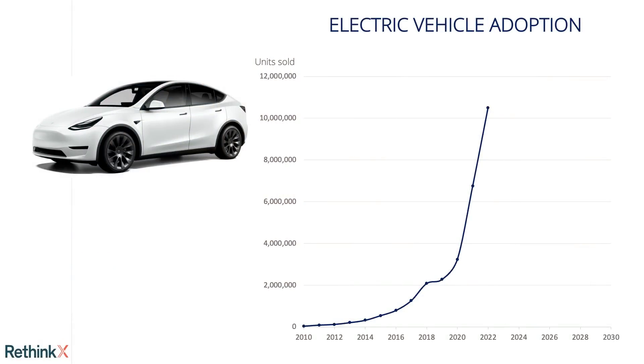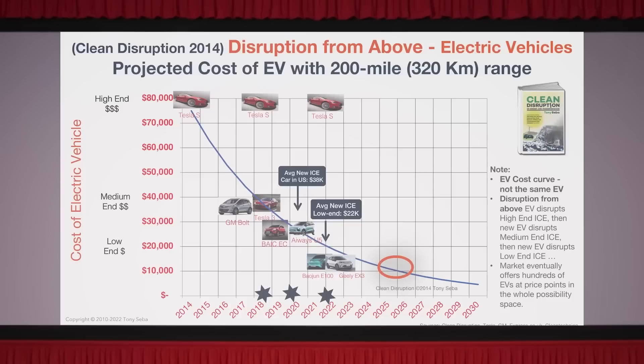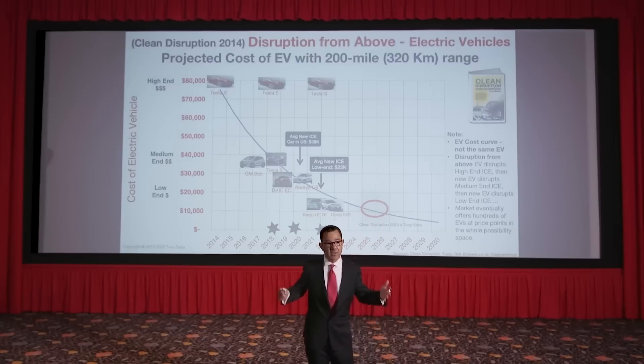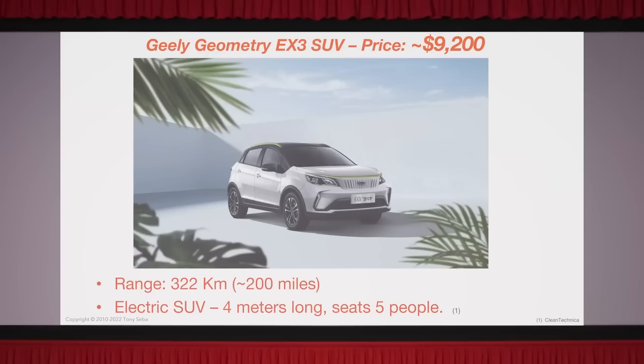In transportation, it's the same pattern. Adoption of EVs is growing explosively, and again Tony Seba's predictions were correct. The cost curve in Clean Disruption predicted the market would offer a 200-plus mile electric vehicle by 2025 for about $10,000. The idea that there would be an electric vehicle for $10,000 — a tenth of the cost of the Tesla Model S at the time — was considered insane. And Geely announced a new SUV, 200 miles, precisely as predicted, for less than $10,000. Cost curves are like gravity.